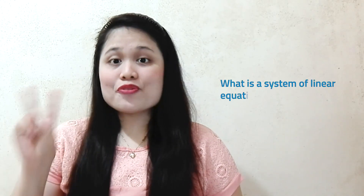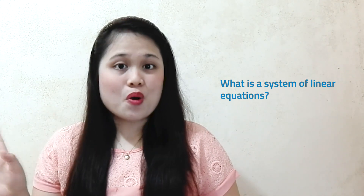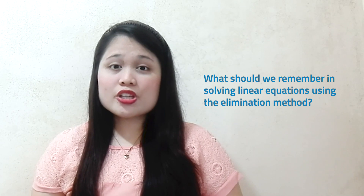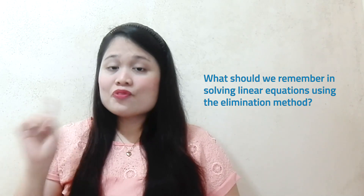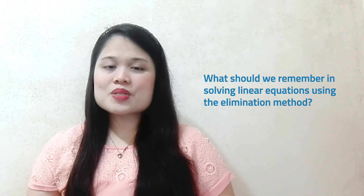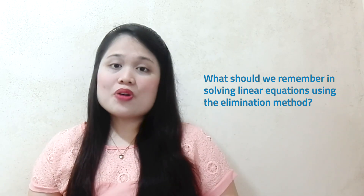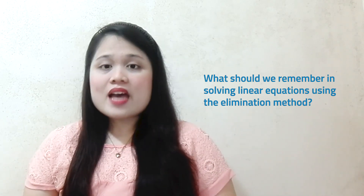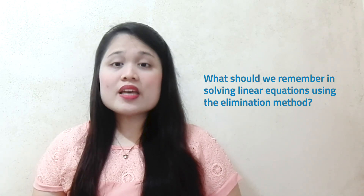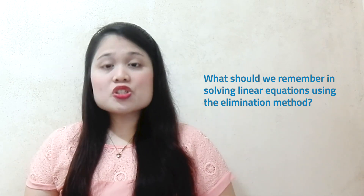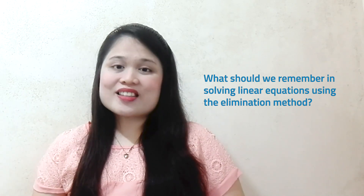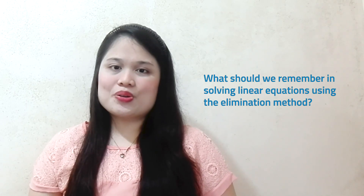Fantastic, students! Now, let's go back to our two questions earlier. A collection of two or more linear equations, each containing one or more variables, is called the system of linear equations. Here are the steps in solving a system of linear equations using the elimination method: First, write both equations in standard form, ax plus by is equal to c. Second, multiply one or both equations by non-zero constants to create opposite coefficients for one of the variables. Third, add the equation from step 2 to eliminate one variable and solve for the remaining variable. Fourth, substitute the known value found in step 3 into one of the original equations to solve for the other variable. Fifth, check the solution for both equations and write the answer as an ordered pair.